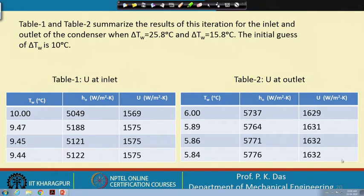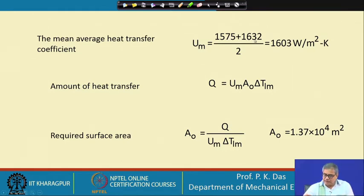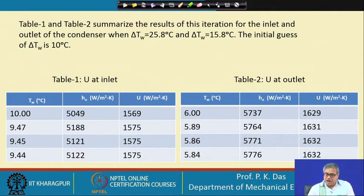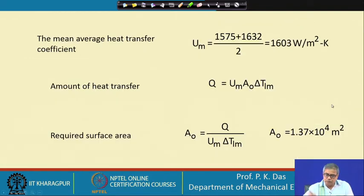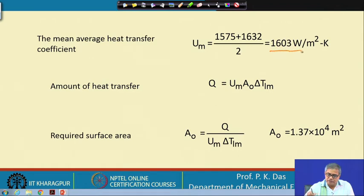From the previous calculations, the inlet-side overall heat transfer coefficient is 1575 W/m²K and the outlet-side is 1632 W/m²K. With these two values we calculate the average heat transfer coefficient. The total rate of heat transfer Q is already known from earlier — we know how much steam needs to be condensed and in what condition it enters the condenser.